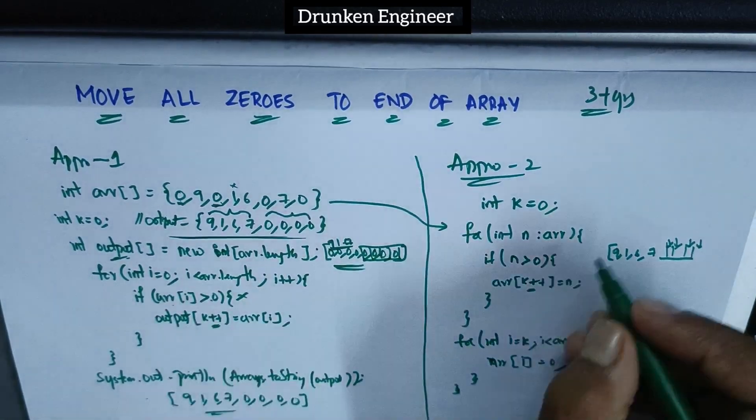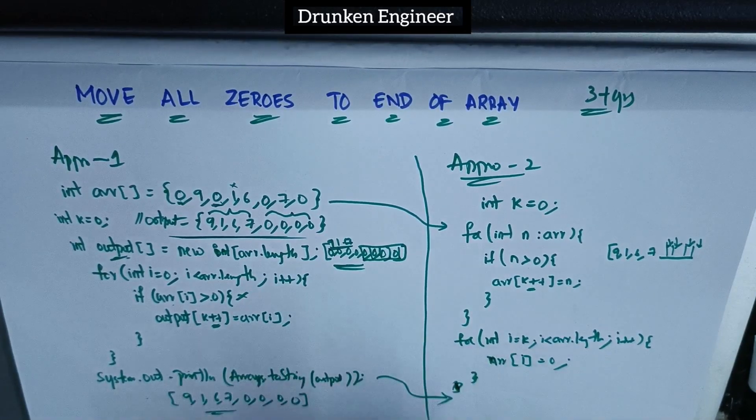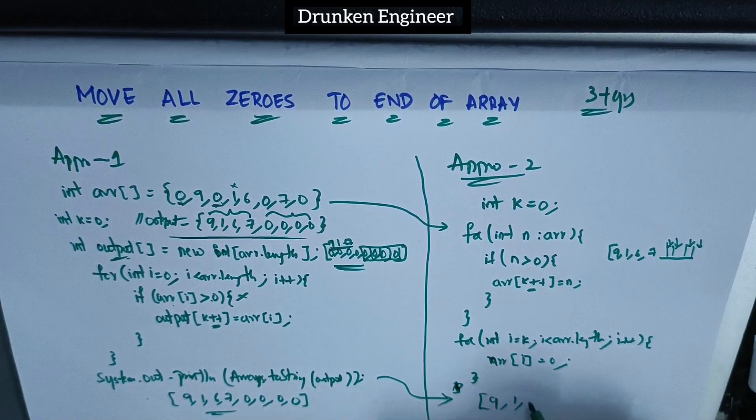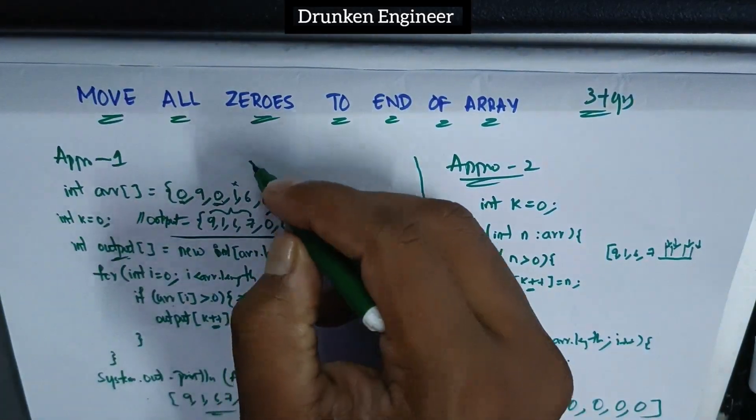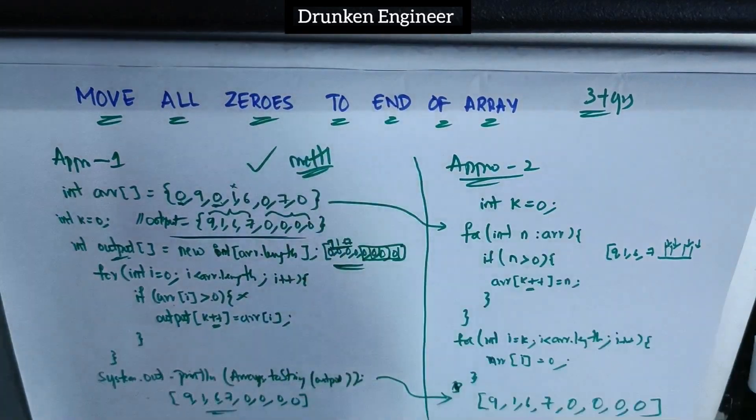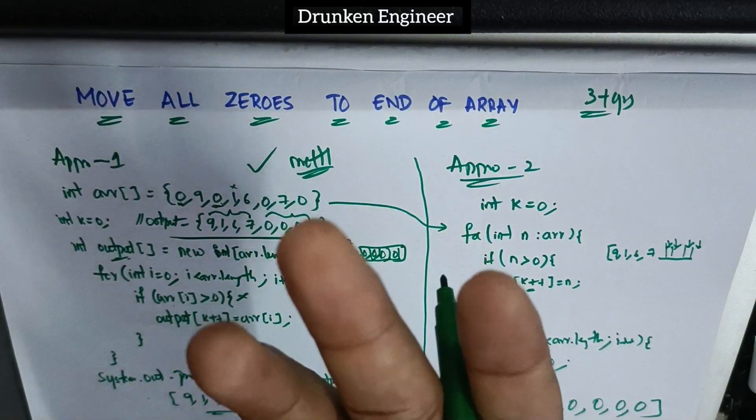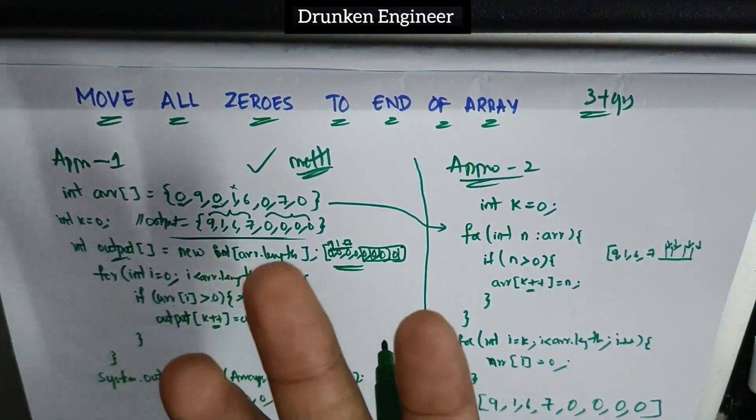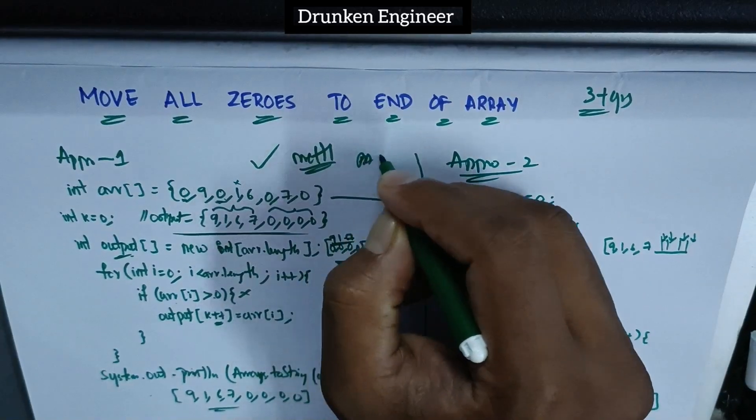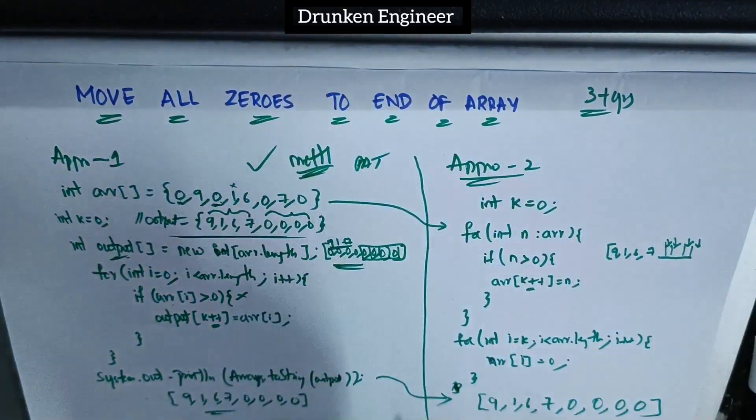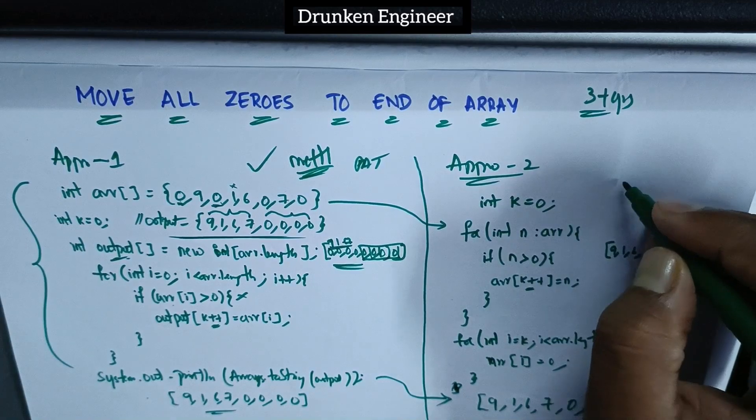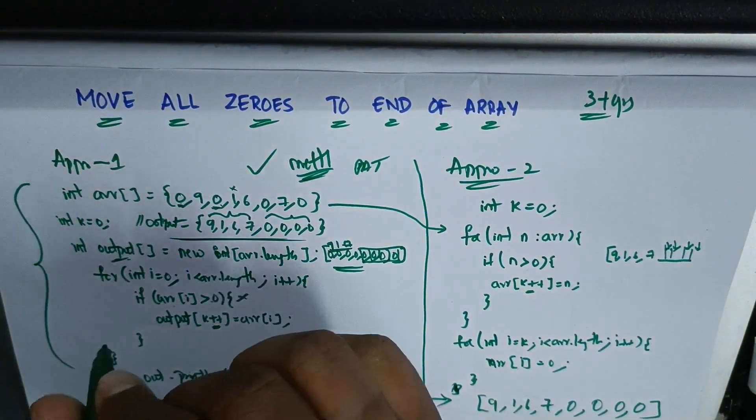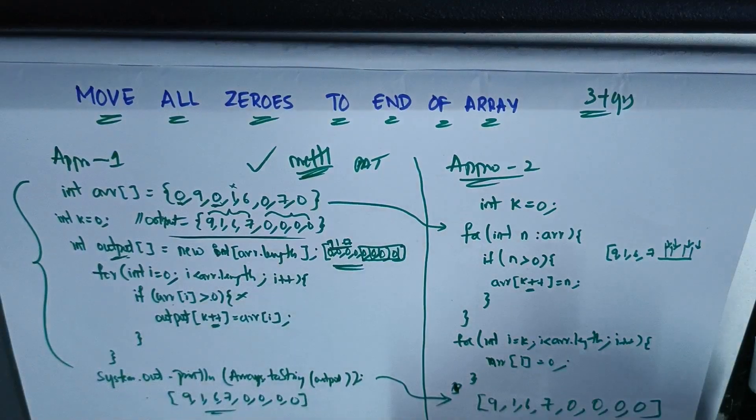If I do System.out here, I'll get the same output: nine, one, six, seven, zero, zero, zero. I was selected in the coding round. This was the solution I gave in the Metal exam. Metal is a platform for conducting coding tests used in Cognizant and Wipro interviews. After writing on paper without using extra array, I gave this solution and was selected.